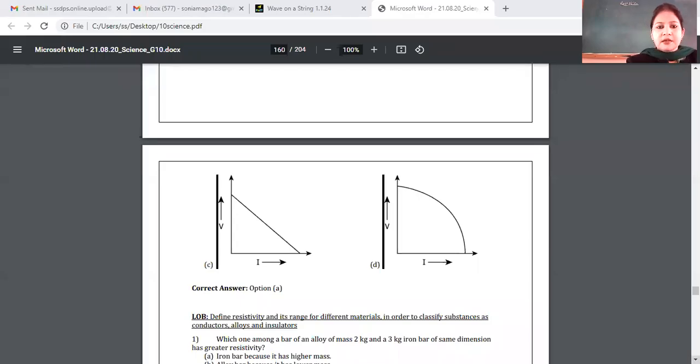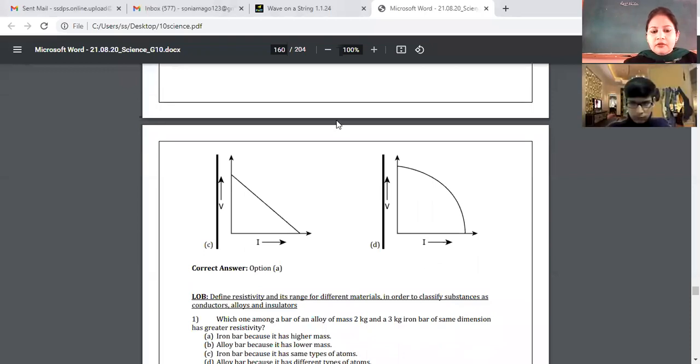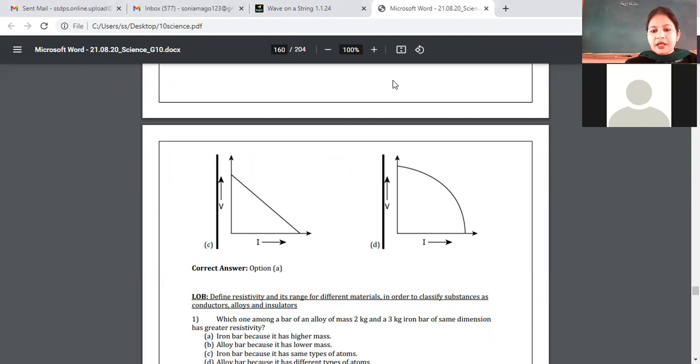Okay, students, let's see some questions of electric effects of current today. So see first question, which one among the bar of an alloy of mass 2 kg and 3 kg iron bar of same dimension has greater resistivity.